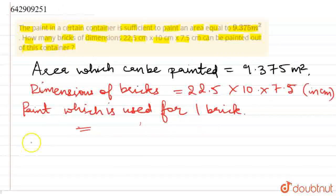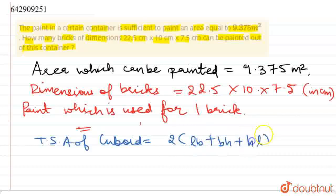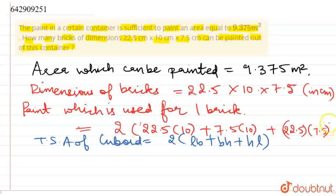See, brick is in the form of a cuboid and the total surface area of a cuboid is two times length into breadth plus breadth into height plus height into length. We will use this: 2 times 22.5 into 10 plus 7.5 into 10 plus 22.5 into 7.5. The total values will be 2 times 225 plus 75 plus 168.75 centimeter square.